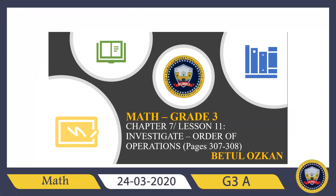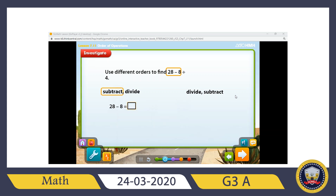Hello everyone, welcome to our math class. Today we will start to learn a new topic which is order of operations, and we will cover pages 307 and 308. Please open page 307. Let's start with a quick question: use different orders to find 28 minus 8 divided by 4. While solving two-step problems, you can see the operations written this way.